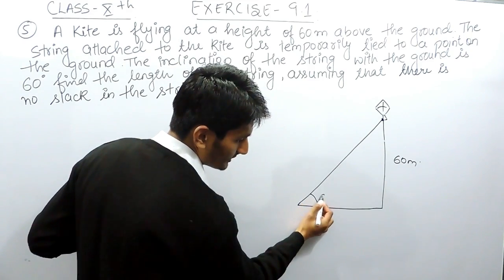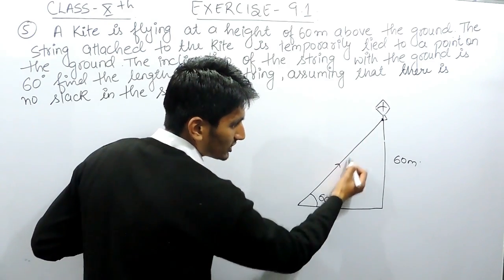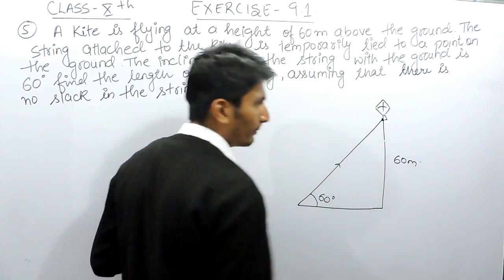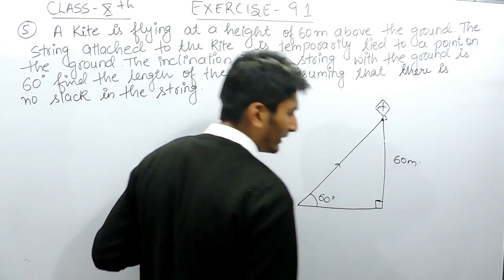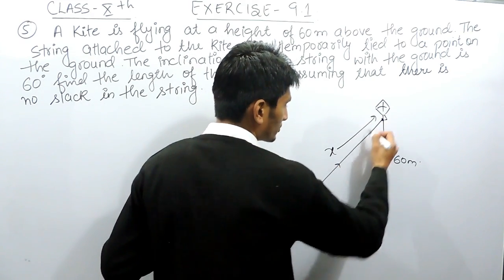This string is making an angle of 60 degrees with this ground. This is a string to which this kite is tied, and this is 60 meters above the ground, so obviously this distance is perpendicular here, and you have to find the length of this string.